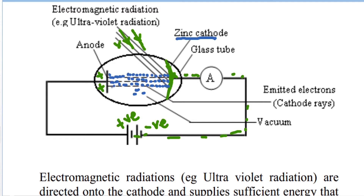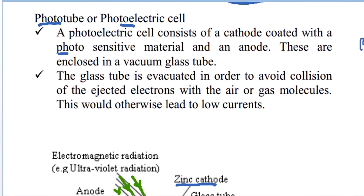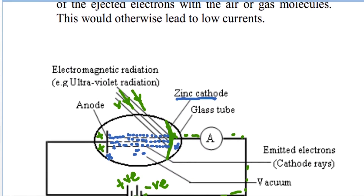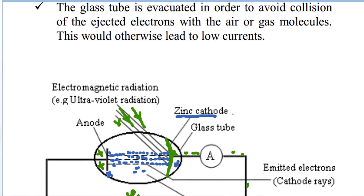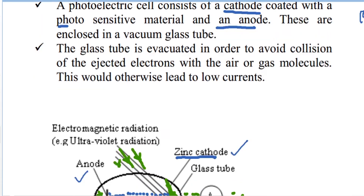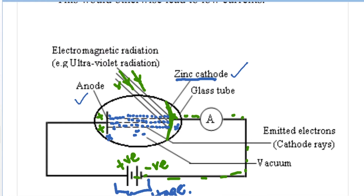The emitted electrons are negatively charged and are attracted towards the positive terminal — the anode. The speed with which they move from cathode to anode is determined by the voltage. The cathode and anode are enclosed in a vacuum glass tube.